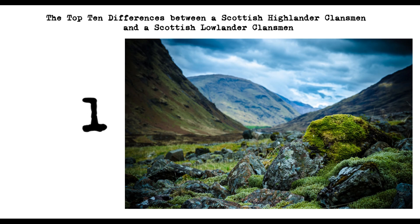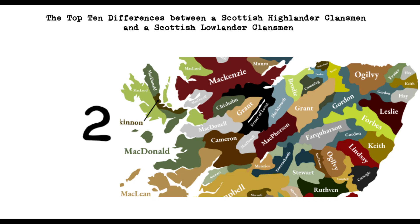2. Clan System. The clan system was much stronger in the Highlands, where communities were more isolated and loyalty to one's clan was essential for survival. Lowland communities were more individualistic, and kinship ties were weaker.